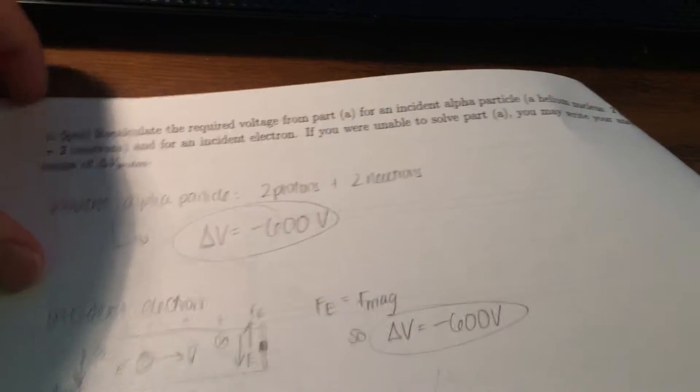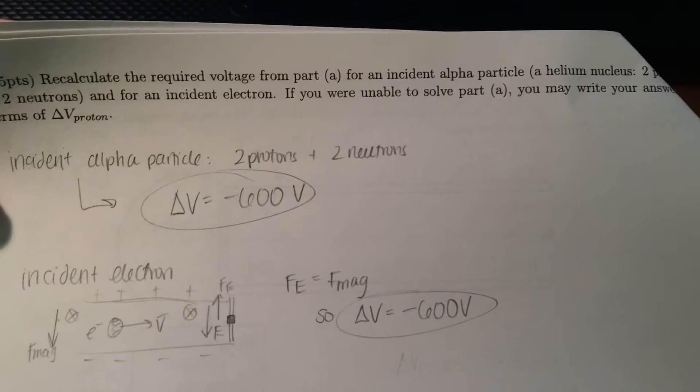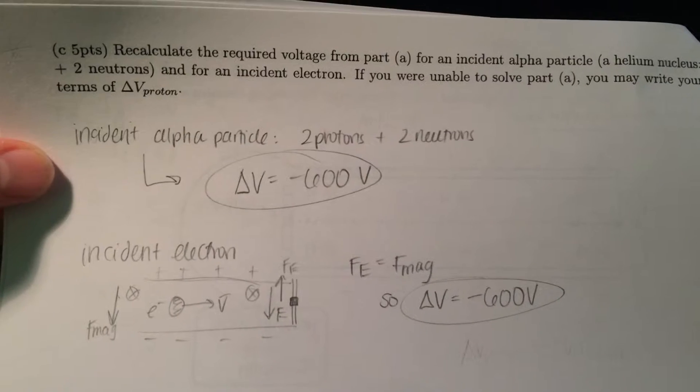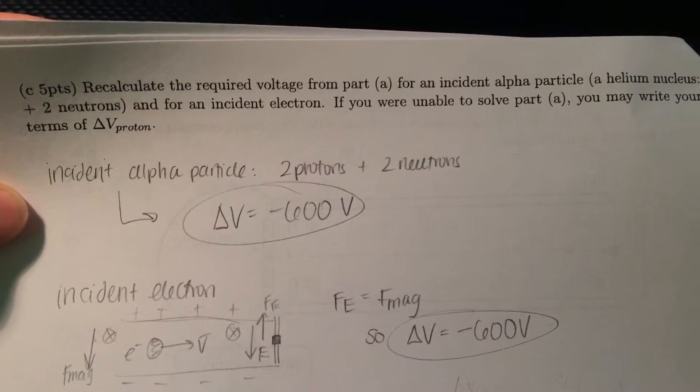The next part of the question was recalculate the required voltage from part A for an instant alpha particle, which is just a helium nucleus, so two protons and two neutrons, which means it's positively charged, and for an instant electron.